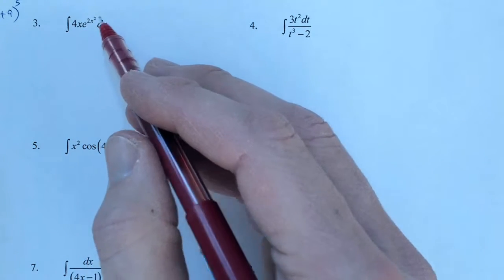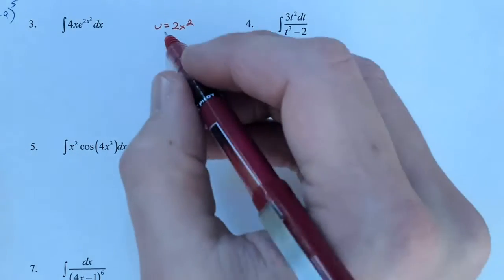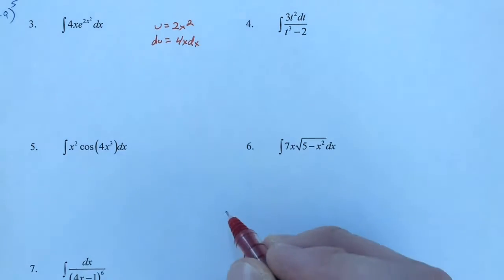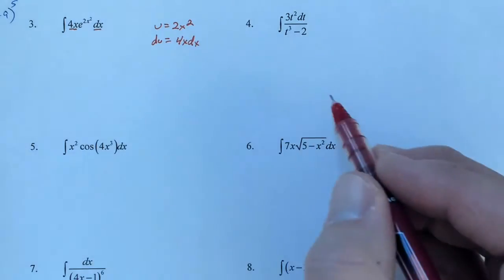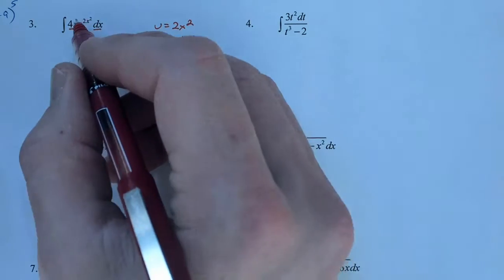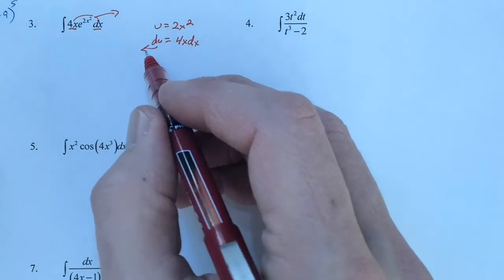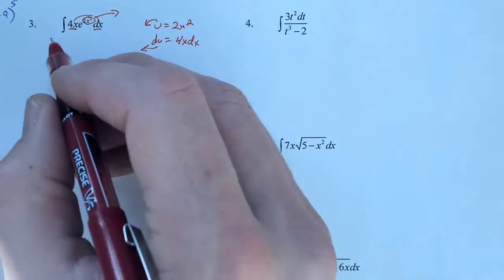So let's make u equal to our inner function of 2x squared. Now du turns out happens to be 4x dx. And that's exactly what we have here, 4x and dx. So they will sub out, and the du will sub in, and also the u will sub in, and the 2x squared will sub out.